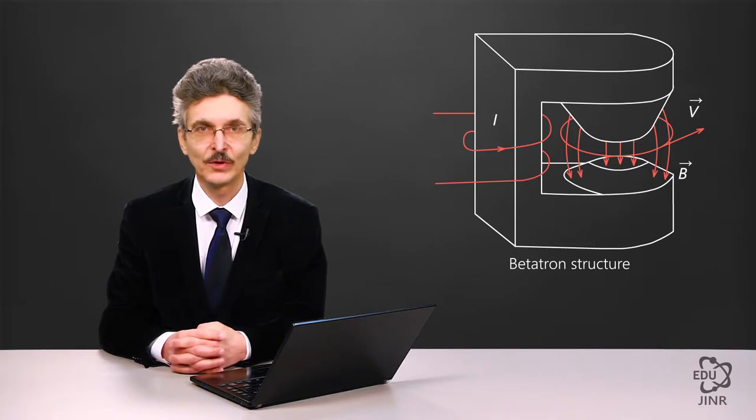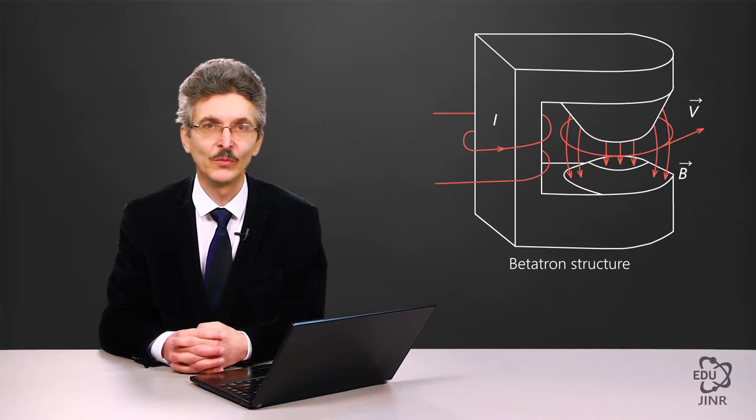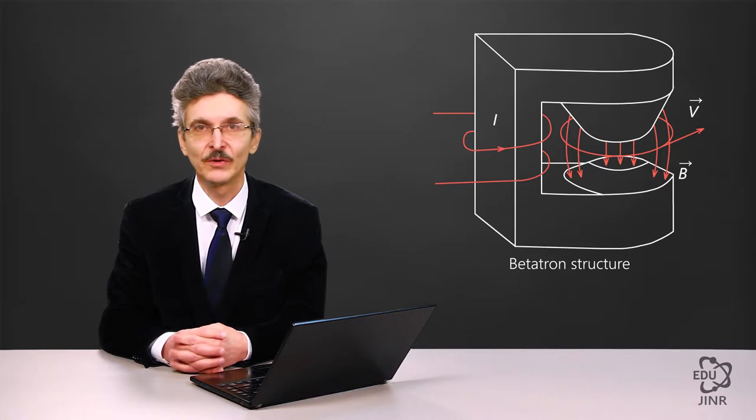An electron beam, which is accelerated in the gap of this magnet core, may be interpreted as a secondary winding. The electron beam undertakes several million revolutions during the acceleration time. There is a direct relation between the number of revolutions to the number of coils of the primary winding, resulting in an increase in energy when compared to the supply voltage.